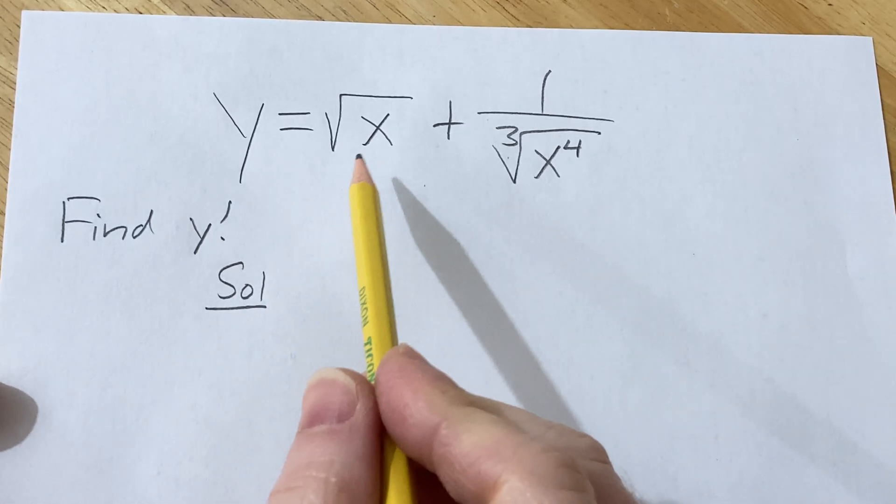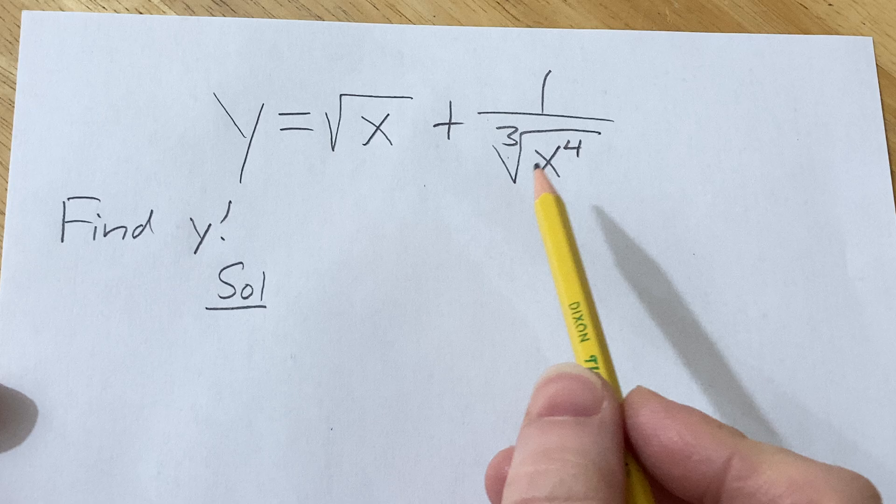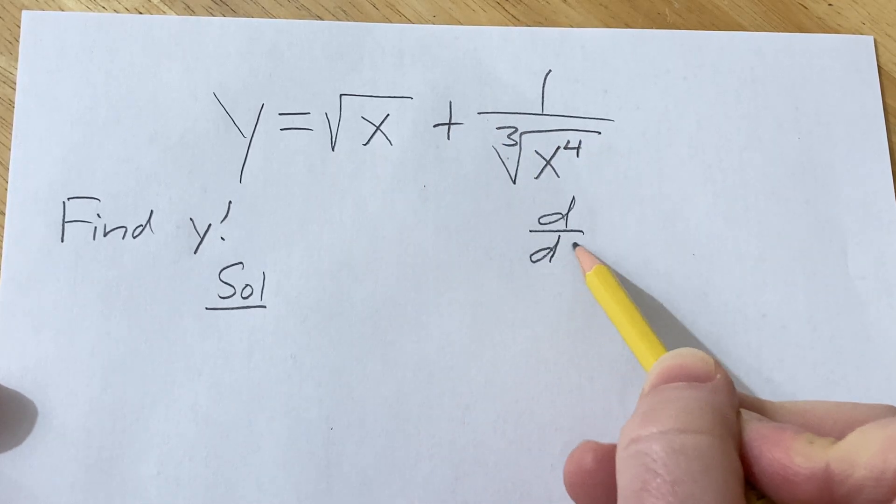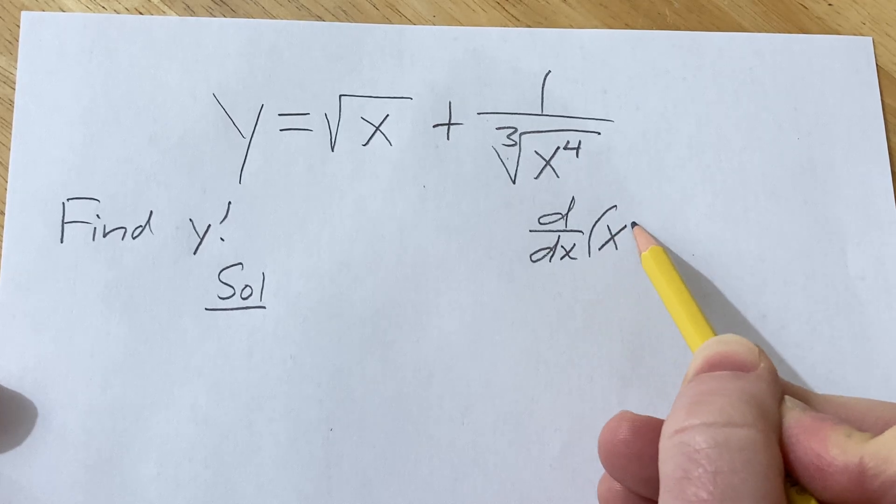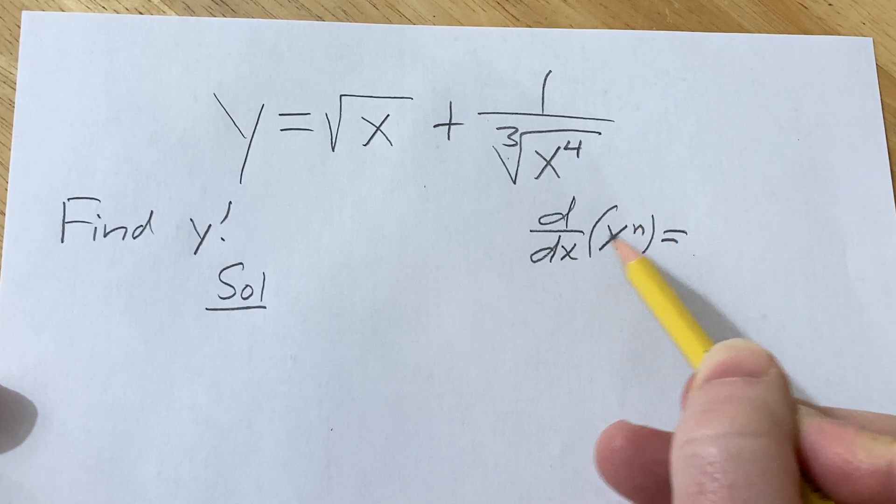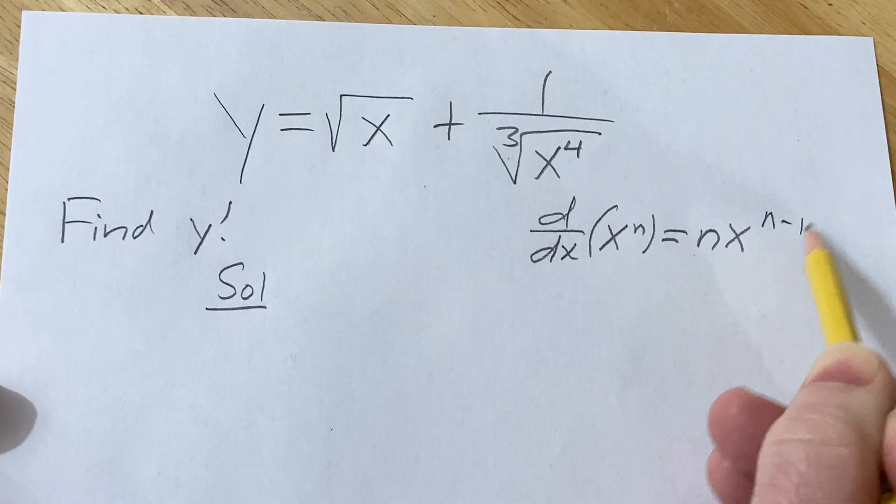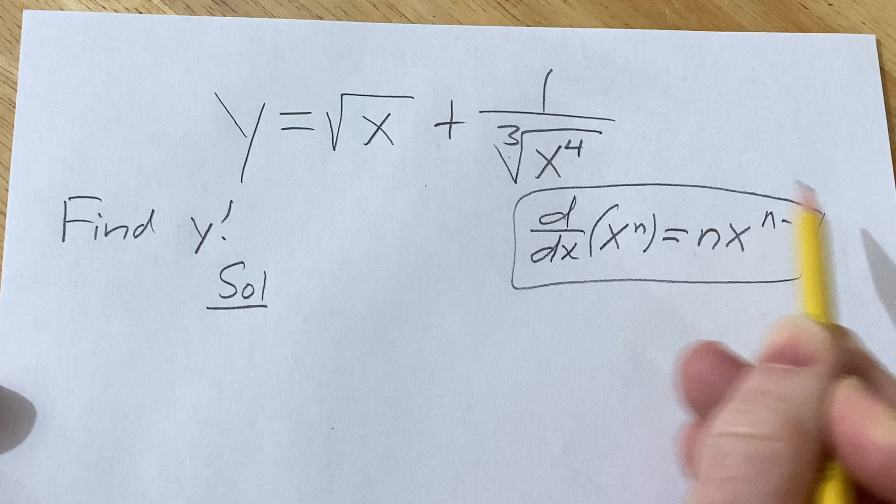So to do this problem, what we're going to do is try to write everything as x to a power so we can use the power rule. The power rule basically says if you have the derivative with respect to x of x to the n, so x to a power, you bring down the n, you put it in the front, and you subtract 1 from the exponent. So that's the rule we're going to use in this problem.